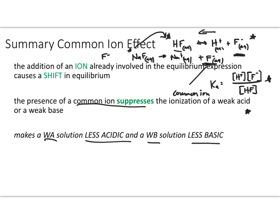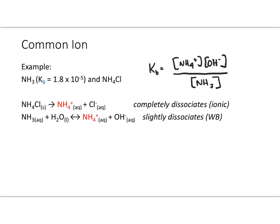Let's discuss the common ion effect with another example. In this case, we have NH₃, which is a weak base. If we put it in solution, it's going to produce its conjugate acid NH₄⁺ and hydroxide. This ionization process will be altered if we add a substance that shows up in the equilibrium expression. This is the Kb expression for the ionization of NH₃, and notice that ammonium is one of the species that shows up in the equilibrium expression.